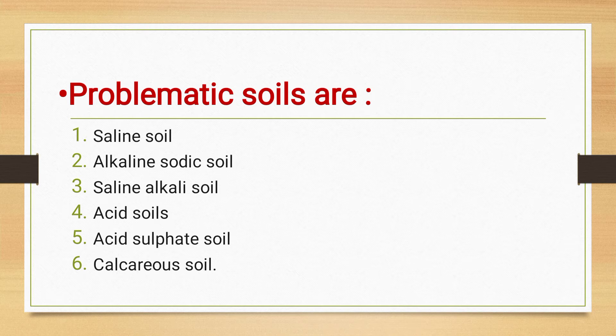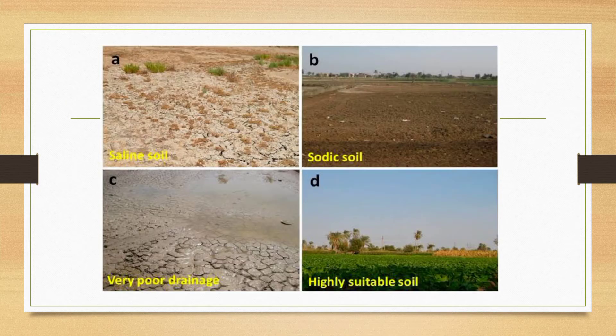In these photographs we have seen different types of soils. In the first photograph we have seen saline soil, the second one is the sodic soil, and a very poor drainage soil is seen in photographs C and D. Highly suitable soil is also shown.